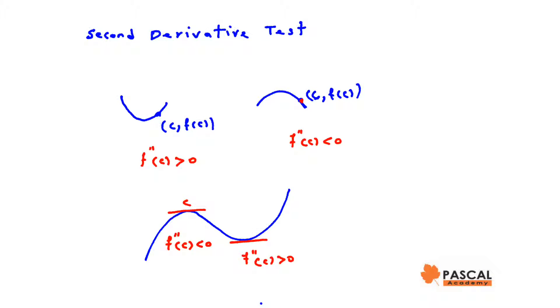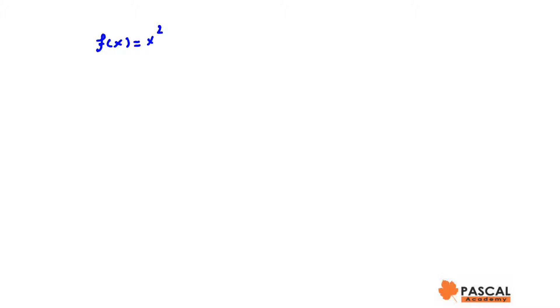Let's have a couple of examples to understand this. Let's find the local maximum and minimum of f of x equals x squared minus 2x using the second derivative test.